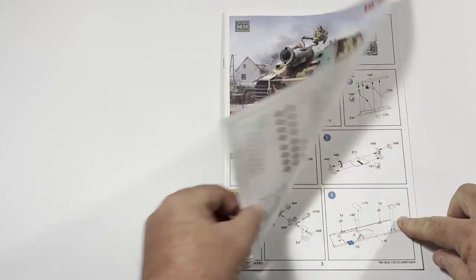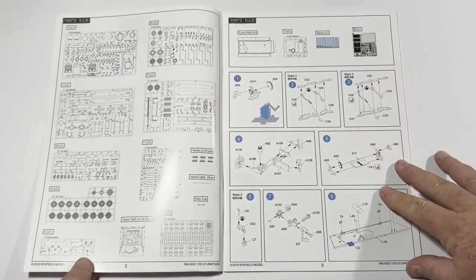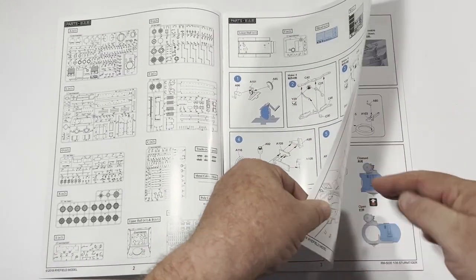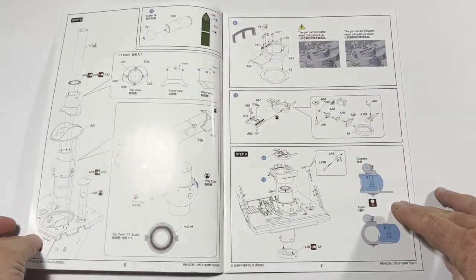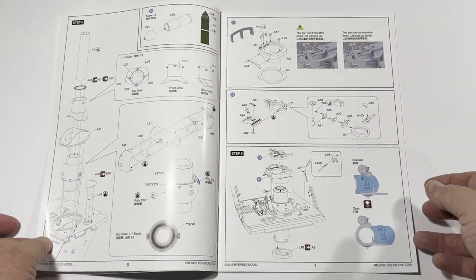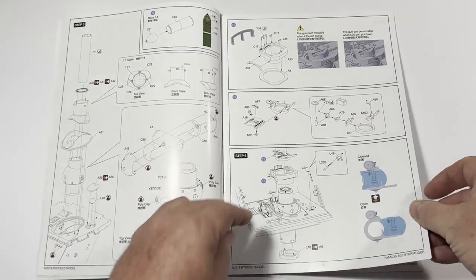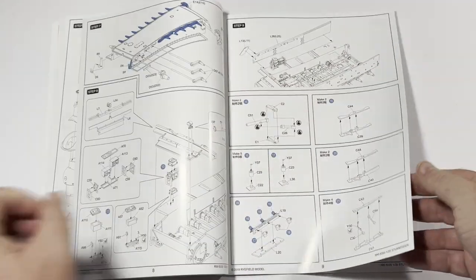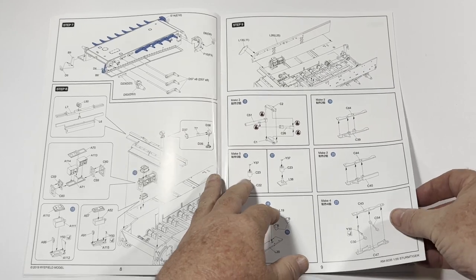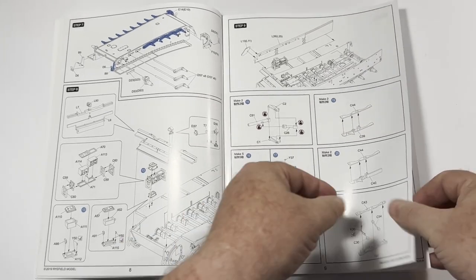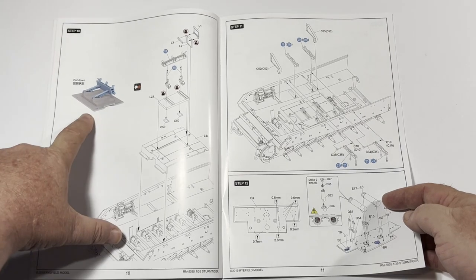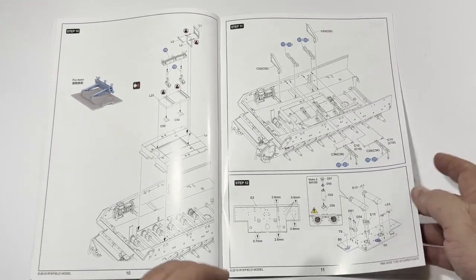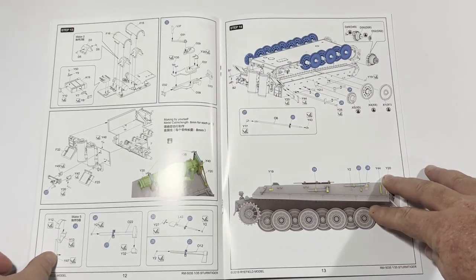Ryefield has produced a wonderful instruction booklet for this kit. Sure it's not up to Wingnut Wings standard but who is nowadays? It does have everything that we would expect such as full parts listing, detailed step-by-step instructions, but what's really appreciated are the colored callouts for specific options or difficult construction phases. I find it interesting to see that the partial interior section gets a lot of attention here and so it should.